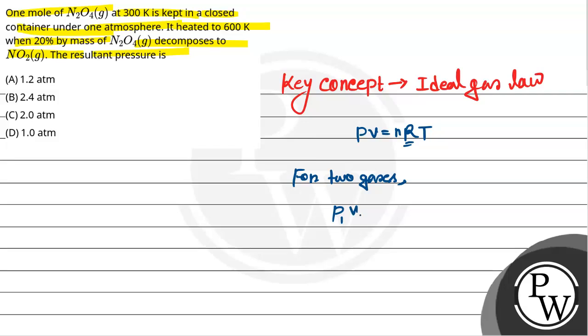P1V1 over n1RT equals P2V2 over n2RT, where P1 is the pressure of the first gas, V1 is the volume of the first gas, P2 and V2 are the pressure and volume of the second gas respectively, and n1, n2 are the number of moles of first and second gas respectively, where the experiment is done at the same temperature.